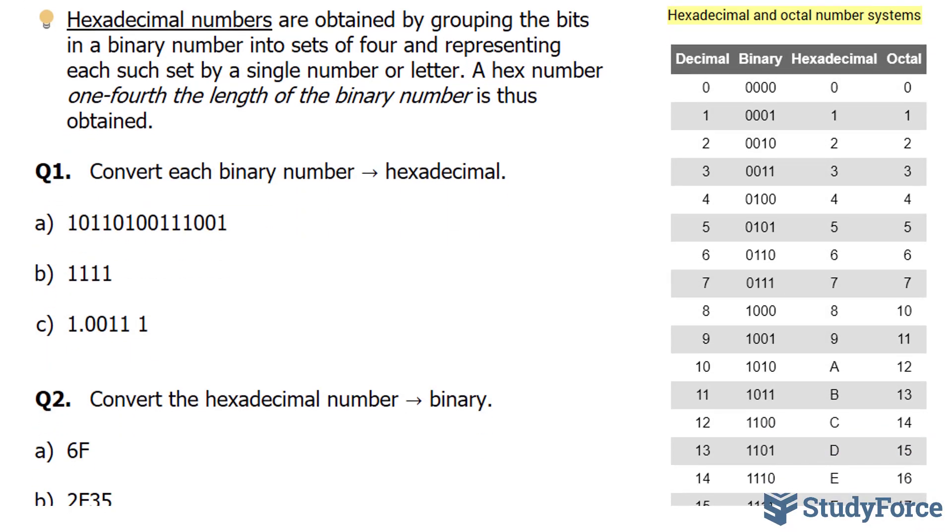Starting with question one, we're asked to convert each binary number to hexadecimal. You'll notice that this number is not grouped in fours, so you can start by grouping it in fours. Every four numbers to the left of this number will be one group.